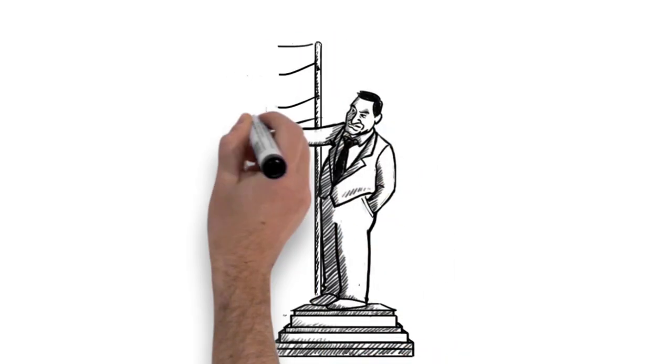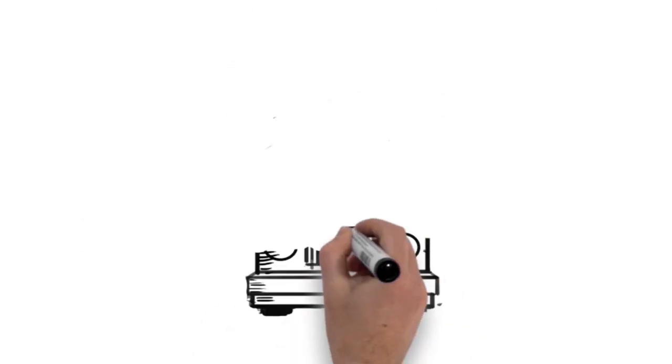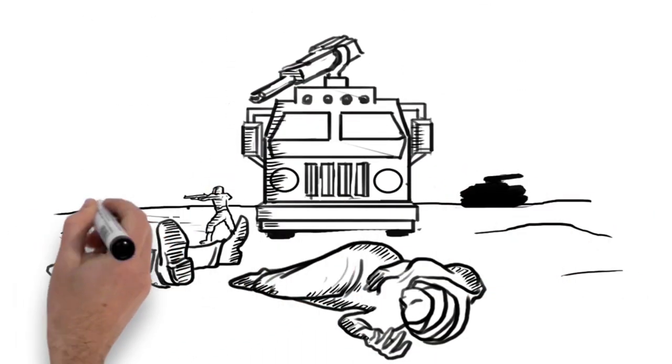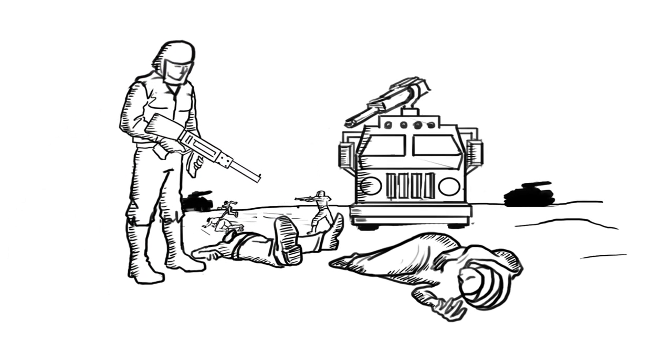Mubarak's national security used brutal force to attack and disperse protesters in Tahrir Square. Tear gas, water cannons, batons, and live ammunition were used to kill over 800 protesters, and 6,000 were injured nationwide.